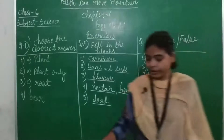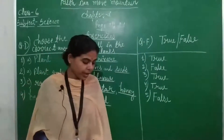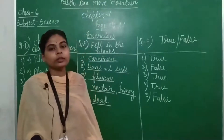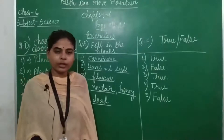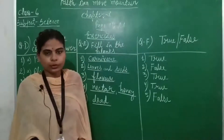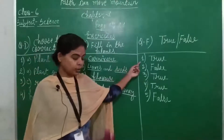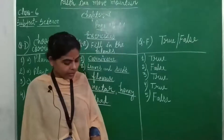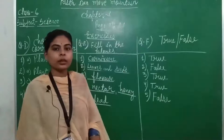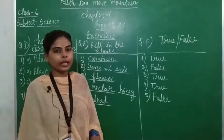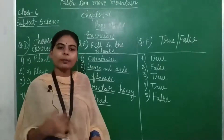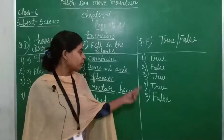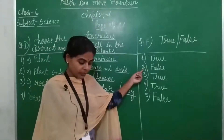Students, read the first point: all the organisms consume different kinds of food. Do all organisms consume different kinds of food? For a plant, we eat its stem, root, flower, fruit, leaves — all are edible. Write false in the second column.